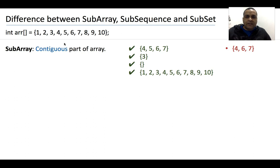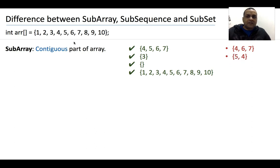4, 6, 7 is not a subarray of the original array. Notice that all three elements 4, 6, and 7 are present in the original array, but they are not next to each other — between 4 and 6 we have 5. So 4, 6, 7 is not a subarray. Similarly, 5, 4 is not a subarray. Even though 5 and 4 appear next to each other, the order in which they appear is not the same as in the original array. So elements must be contiguous and must appear in the same order in both the original array and the subarray.